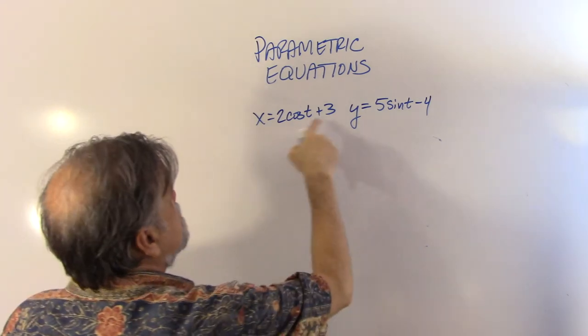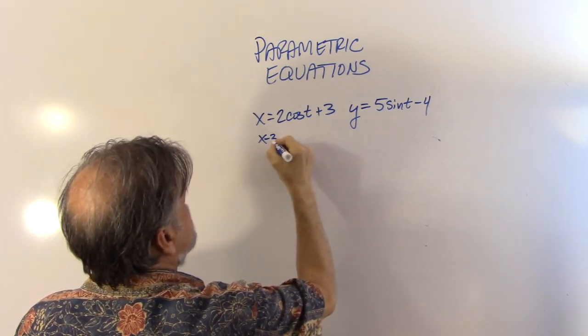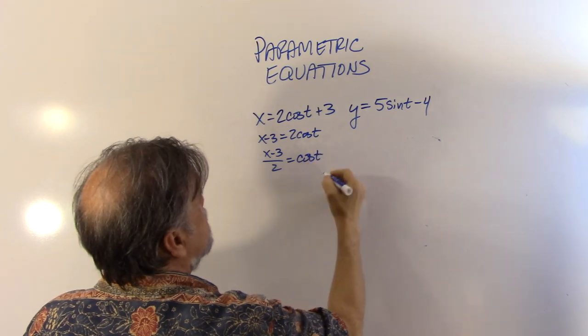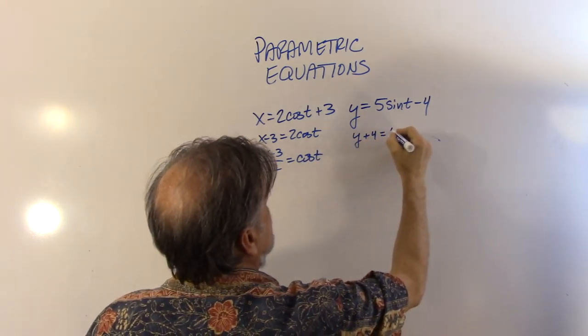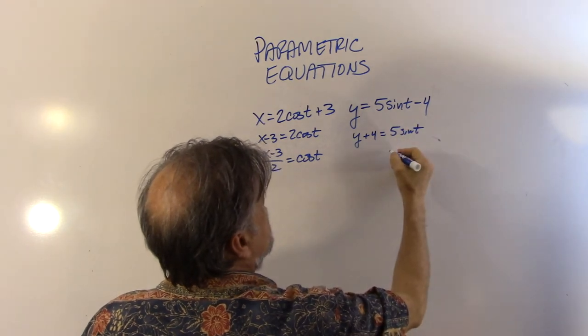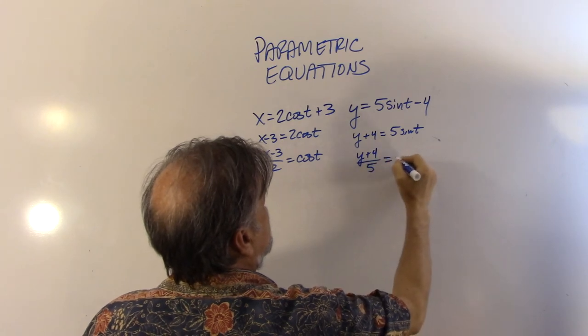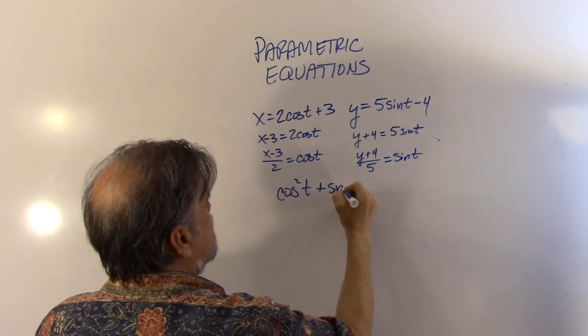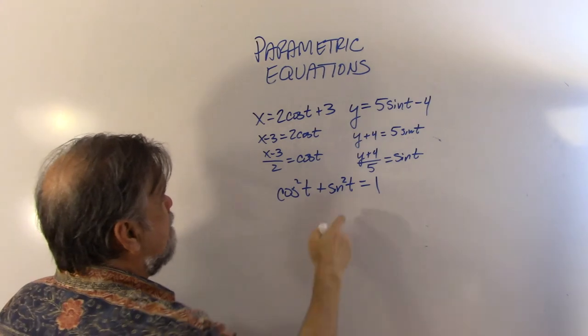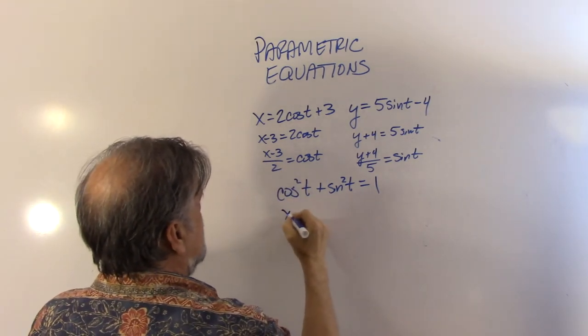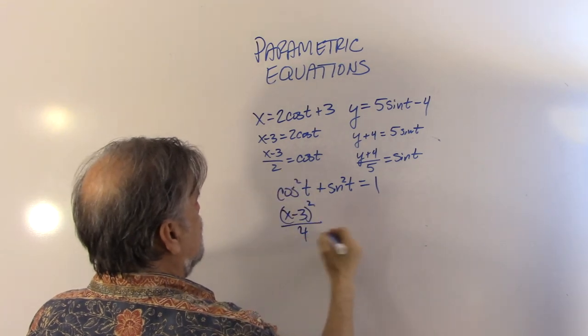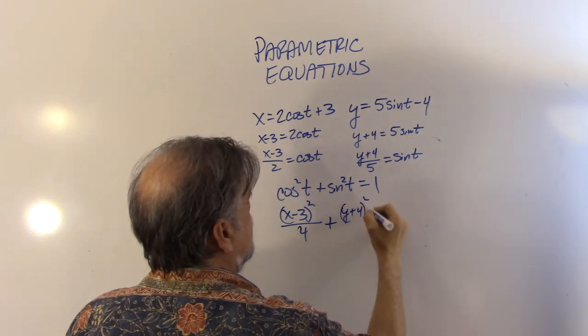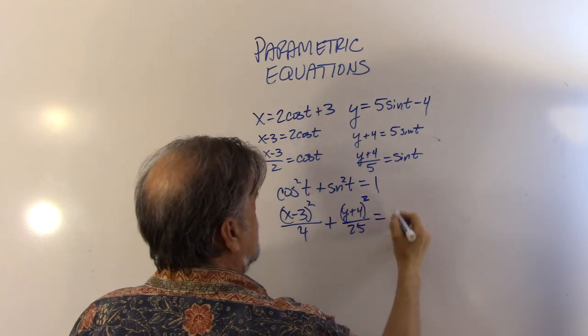So that means this is going to be x minus 3 equals 2 cosine of t. So (x-3) over 2 equals the cosine of t. And over here we have y plus 4 equals 5 times the sine of t, which means (y+4) over 5 equals the sine of t. Now, remember, cosine squared of t plus sine squared of t equals 1, right? Okay. That means this thing squared, which is (x-3) squared over, we'll call that 4, plus, now we're going to square this, (y+4) squared over, let's call that 25, equals 1.